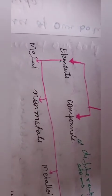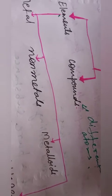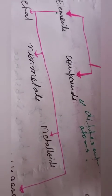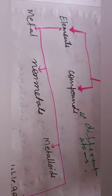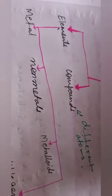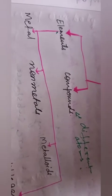Elements are made up of the same kind of atoms, whereas compounds are made up of different kinds of atoms. We'll discuss elements and compounds in the next video.